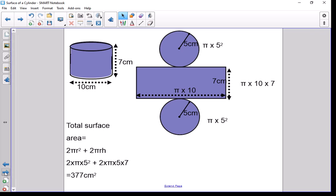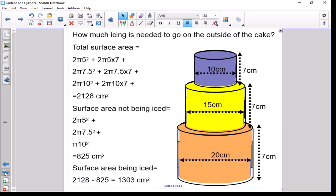Let's do some application. So let's consider a cake. Now our cake is made of three tiers, all three cylindrical. And how much icing is needed to go on the outside of the cake in surface area in centimeters squared.